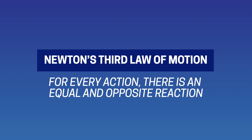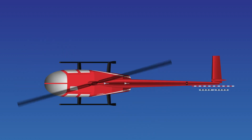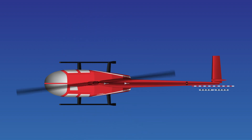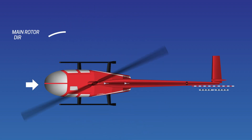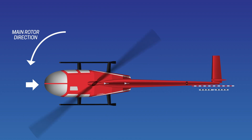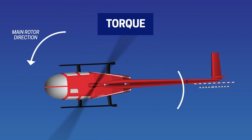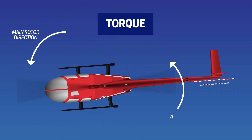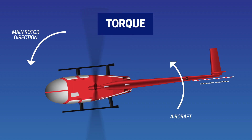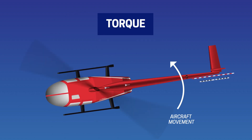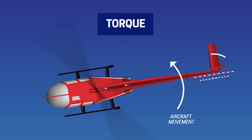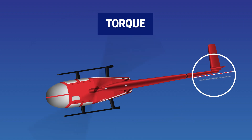Newton's third law of motion states that for every action there is an equal and opposite reaction. In powered flight, meaning the engine is powering the helicopter, as the main rotors are turned the helicopter is subject to a force known as torque. This is the opposition to the rotational direction, so as the engine turns the main rotor blades above the helicopter in one direction, the body of the helicopter to which the engine is mounted wants to turn in the opposite direction.